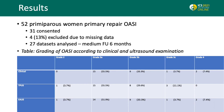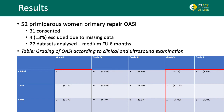52 women were approached after primary repair of OASI during the inclusion period. 31 consented to participate, and 4 were excluded due to missing data, leaving 27 datasets analyzed at a median follow-up of 6 months. One patient rated as a 3A tear clinically was found to have normal anal sphincter anatomy on both ultrasound modalities.